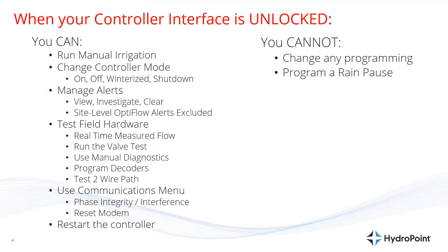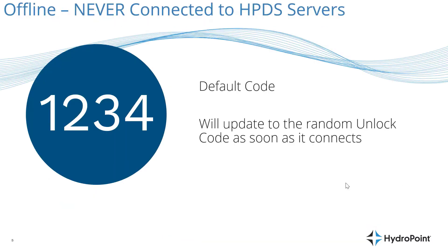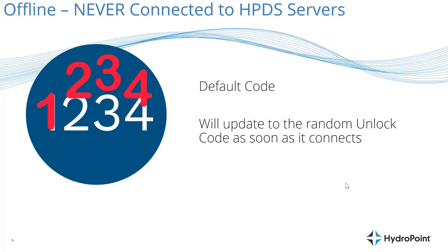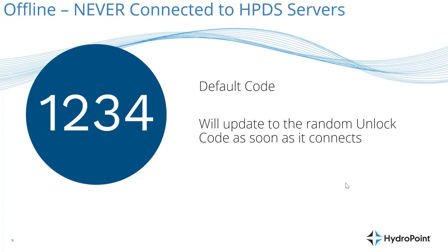At that point, you'll likely go right to the communications menu to diagnose why the controller was offline and how to get it communicating again. One last thing: if your controller has never connected to the HydroPoint servers, it will have a default unlock code of 1, 2, 3, 4. But as soon as the controller connects to the HydroPoint servers, that unlock code will update and you'll have to find it at WeatherTrack Mobile or WeatherTrack.net.